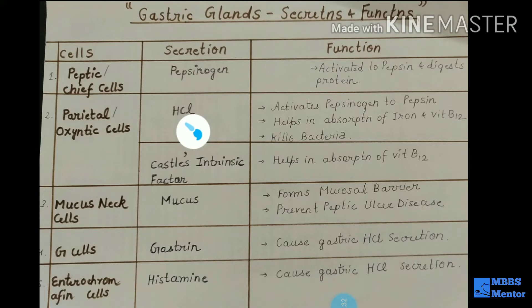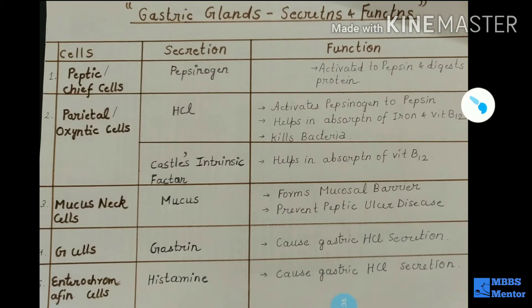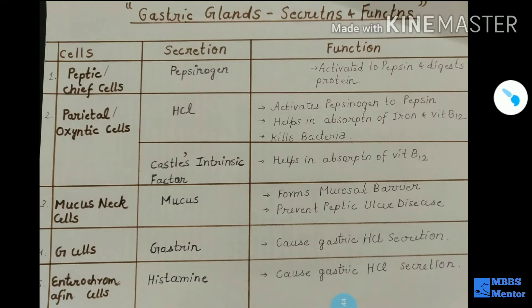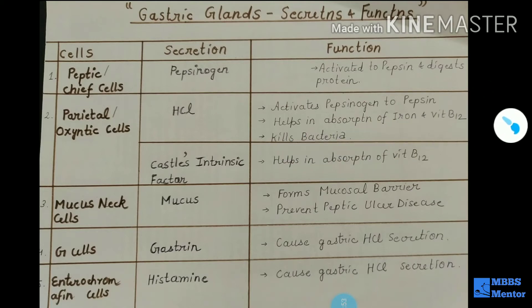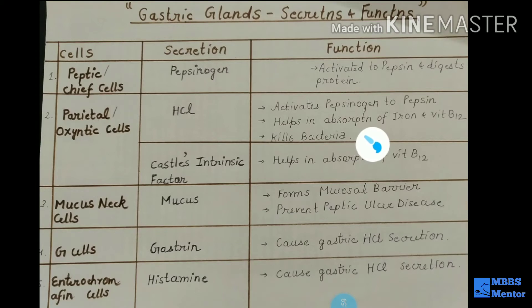Number two is the parietal or oxyntic cells. They secrete two things: HCL and Castle's intrinsic factor. First, HCL — it activates pepsinogen to pepsin, converting the pro-enzyme into its active form. HCL also helps in the absorption of iron and vitamin B12, and kills bacteria.